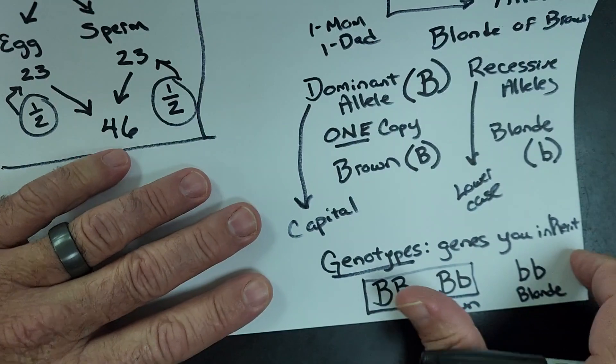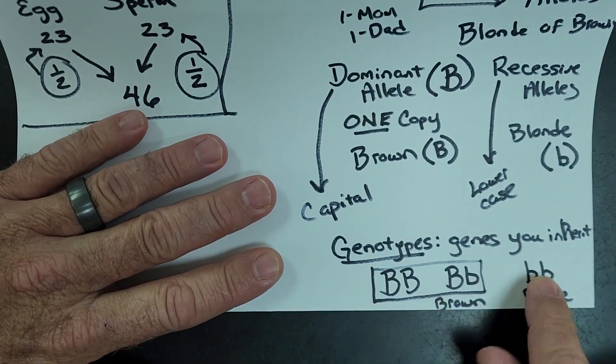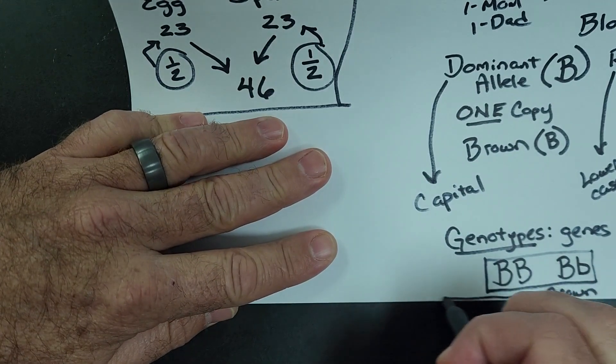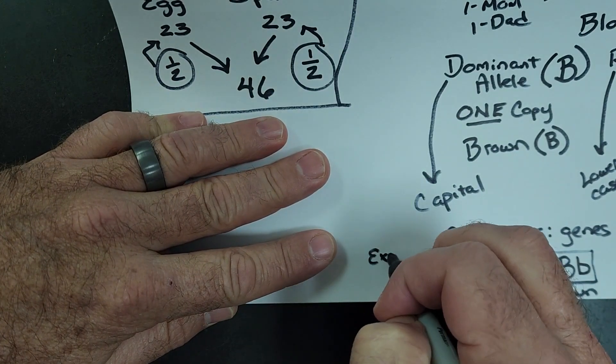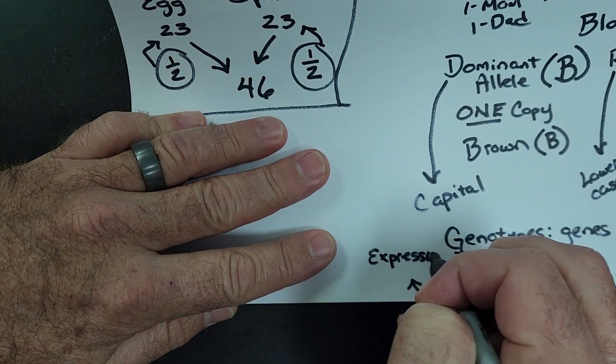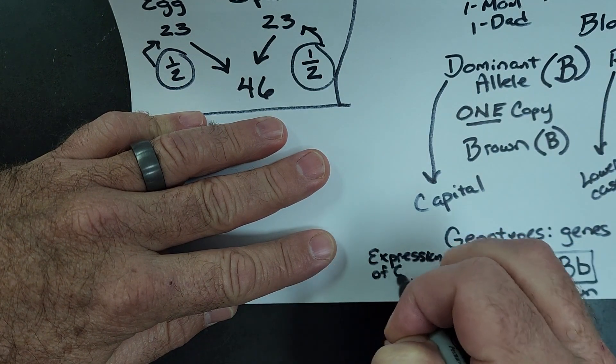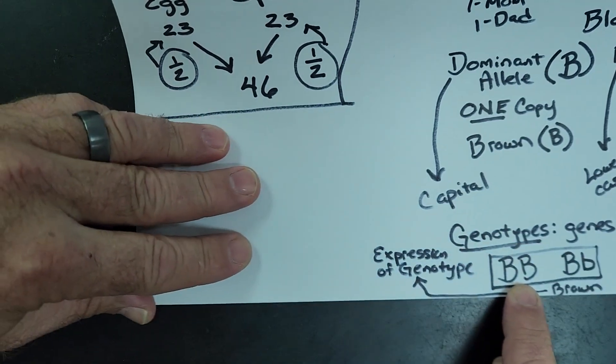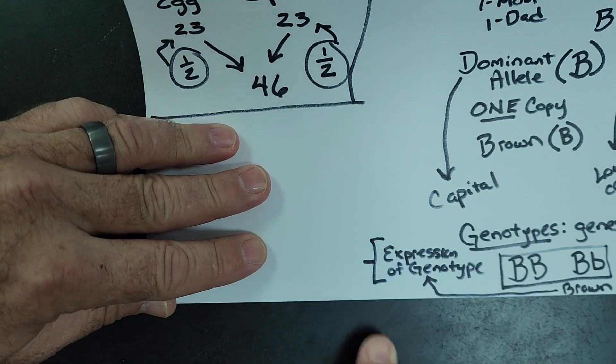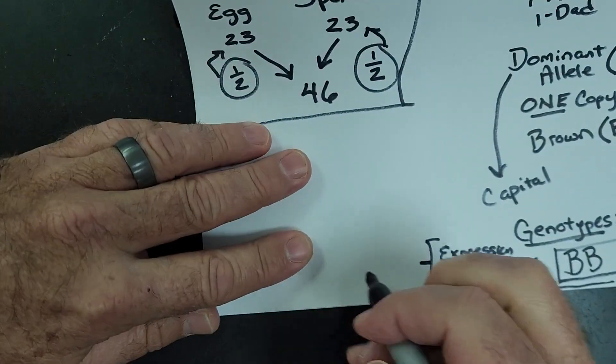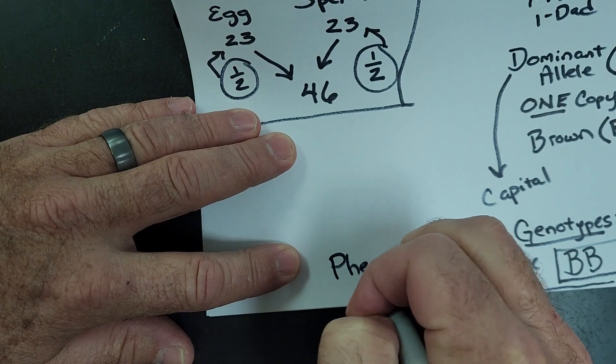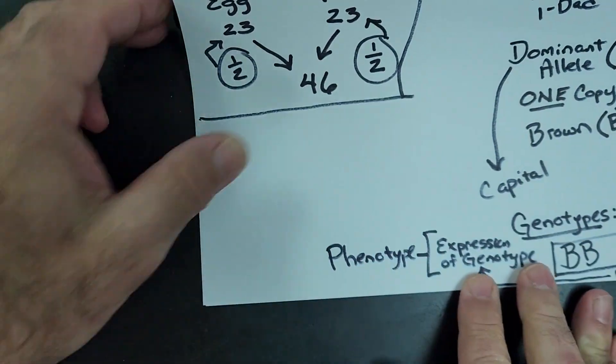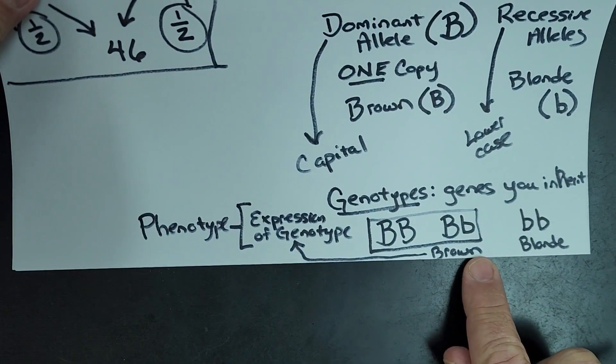And what we call that, so we've used the term genotype for these genes that you inherited, one from mom, one from dad. When you look at your genotype and it says what trait or characteristic you're going to have, that is called your phenotype.